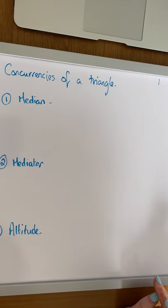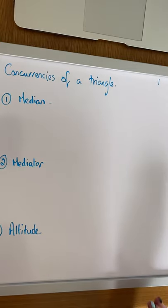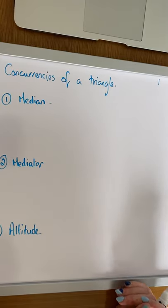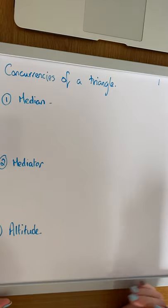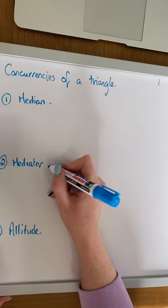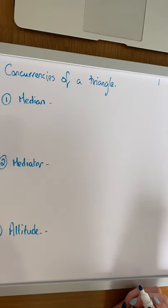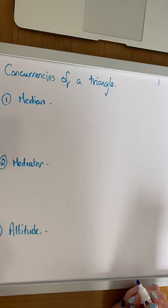Our next video is going to be on concurrences of a triangle. There are three definitions that we need to understand and learn: first of all, the median, the mediator, and the altitude of a triangle.